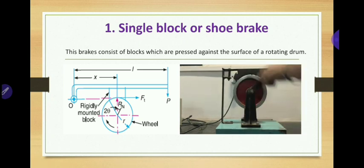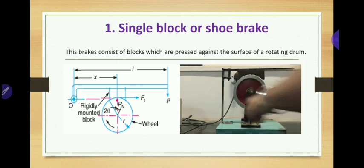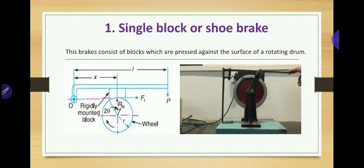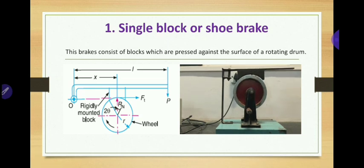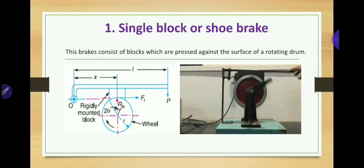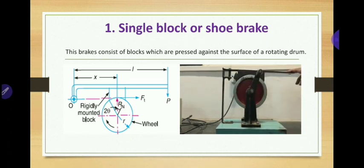If the rotor is rotating in the anti-clockwise direction instead of clockwise, then Ft will act in the left-hand side direction. The friction between the block and wheel causes the tangential braking force to retard the rotation of the wheel. The block is pressed against the wheel by a force P applied to one end of the lever to which the block is rigidly fixed, and the other end of the lever is pivoted on a fixed fulcrum O.